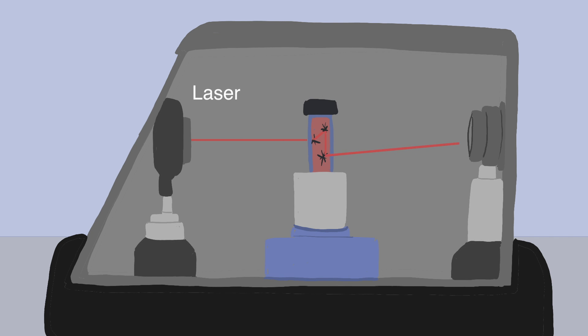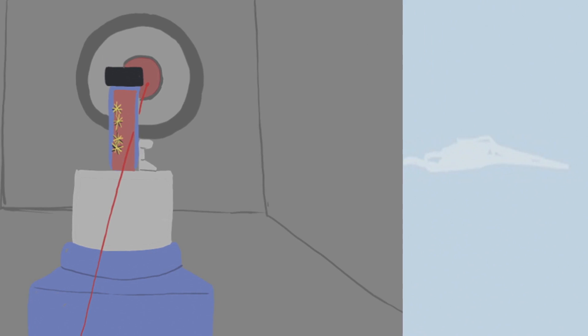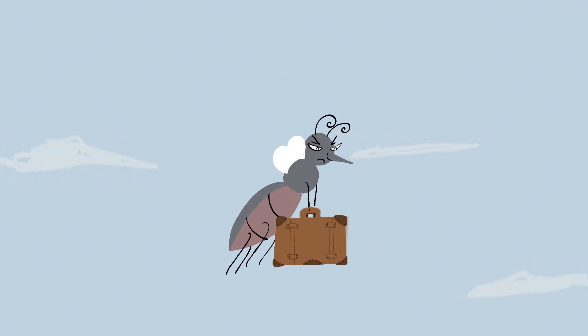When a magnet gets close to the sample, hemozoin is pulled towards the magnet and out of the beam path, thereby allowing more light to pass through the sample. This enables us to detect malarial infection in the patient, allowing patients to get the treatment they need sooner and get better, faster.